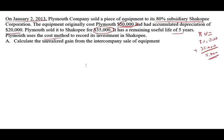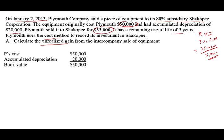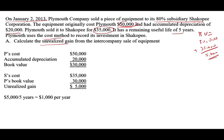We're going to use the cost method to record the investment in S company. Calculate the unrealized gain from the intercompany sale: cost is $50,000, accumulated depreciation is $20,000, book value is $30,000. We sold it for $35,000 minus the book value, giving us a gain of $5,000. This $5,000 is an intercompany gain. We're going to divide it by five and amortize it at $1,000 per year.